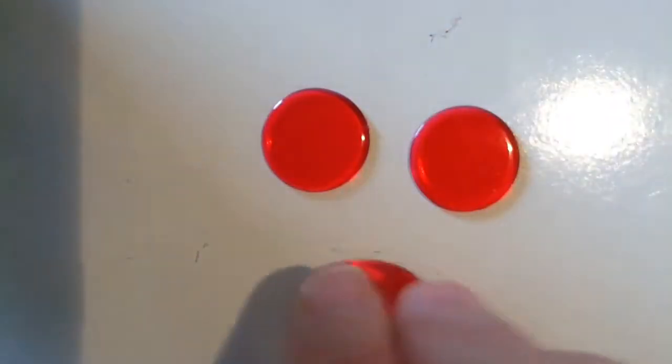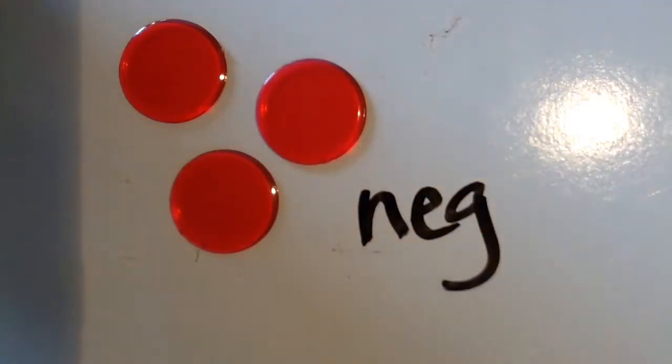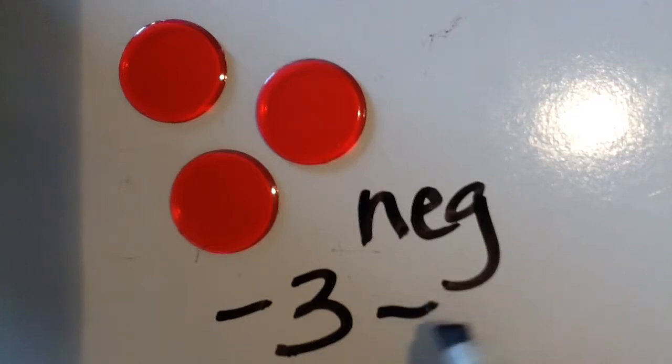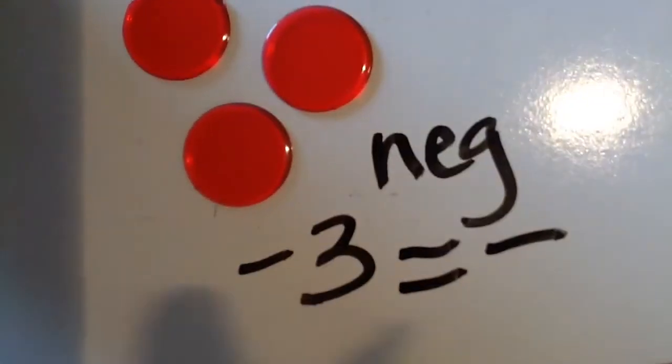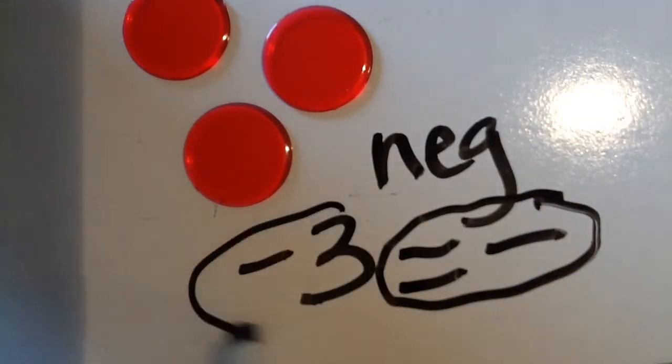Okay, so we can start off with three red disks, and a red disk represents a negative number. So this would be considered negative three. You can represent it either way. Let me just circle this, negative three.